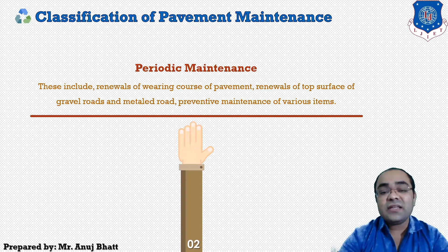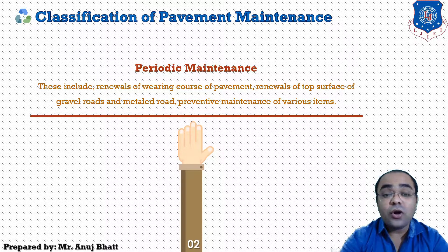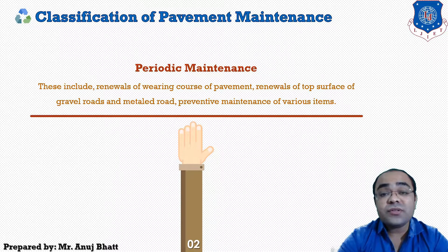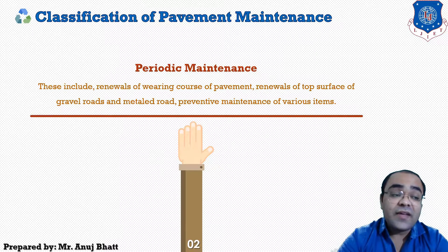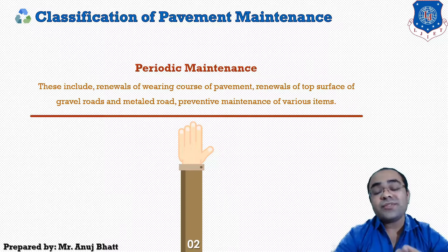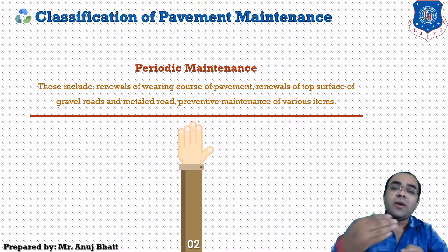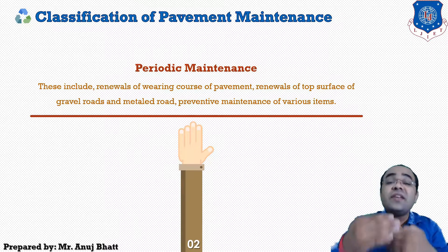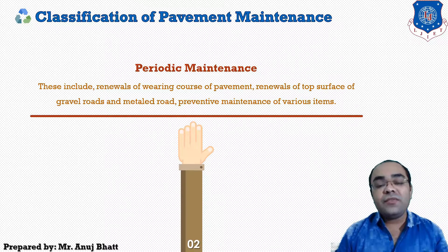The second category is periodic maintenance, which includes renewal of the bearing course of pavement, renewal of the top surface of gravel roads and metal roads, and preventive maintenance of various items. This renewal of the bearing course occurs periodically — once a year or after two years — requiring resurfacing of the pavement.